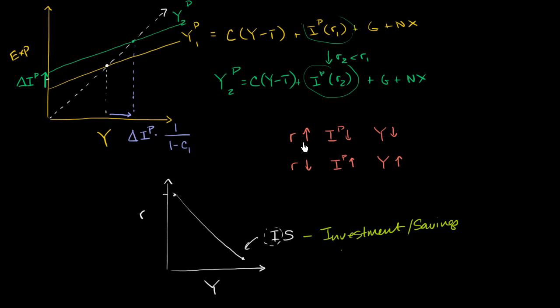High real interest rates, low level of investment. Low level of investment leads to low equilibrium output. So this scenario is closer to that right over there. If real interest rates are lower, then that leads to higher levels of planned investment, which leads to a higher level of equilibrium output.